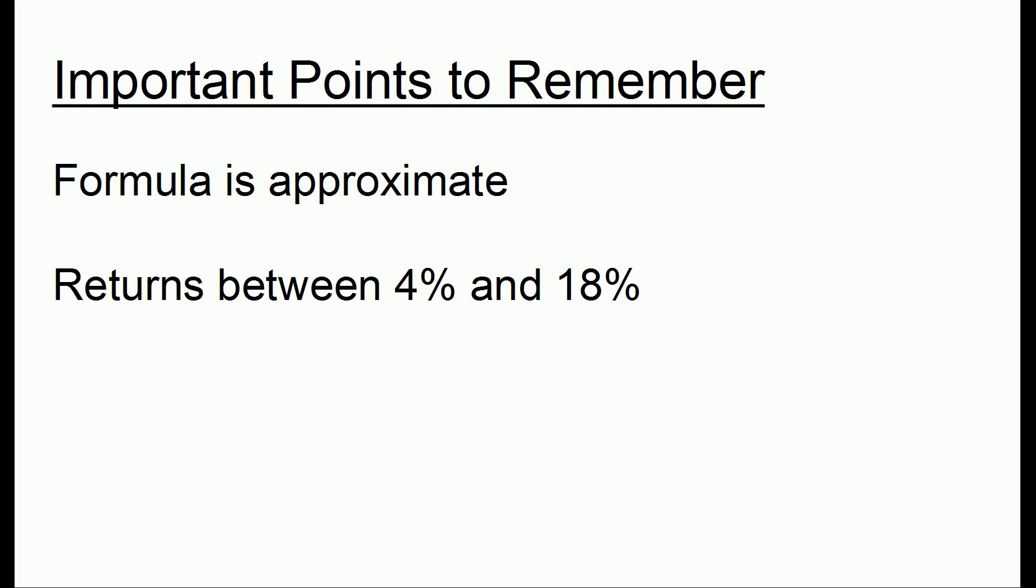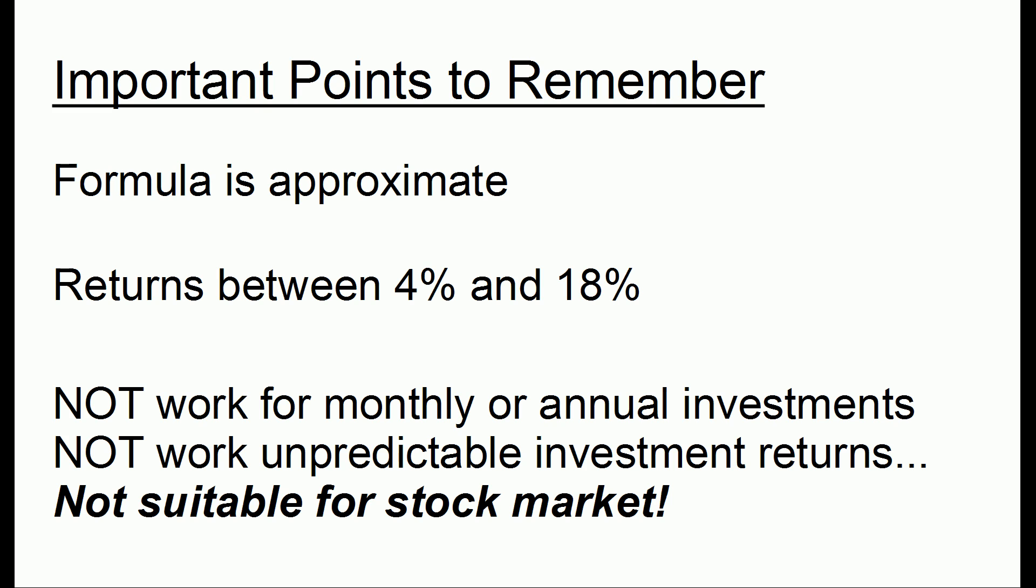It's only going to work for returns between about 4% and 18%. And most importantly, the rule of 72 will not work if you keep investing every month or every year. It also requires a constant return every year. So if you have a return of 10% one year, 5% another year, negative 3% another year, the rule of 72 is not a good guide. It has to work with a constant return.